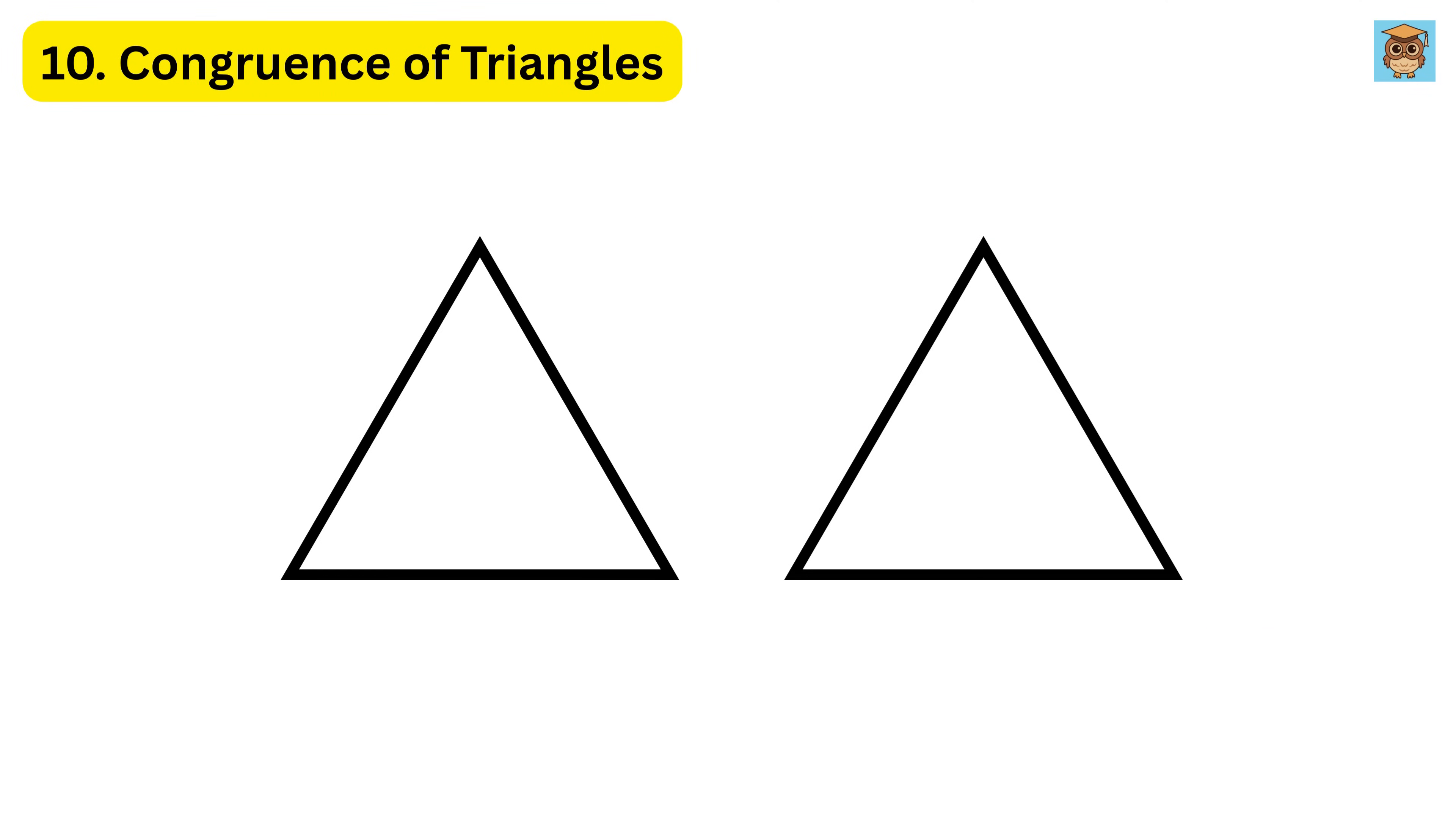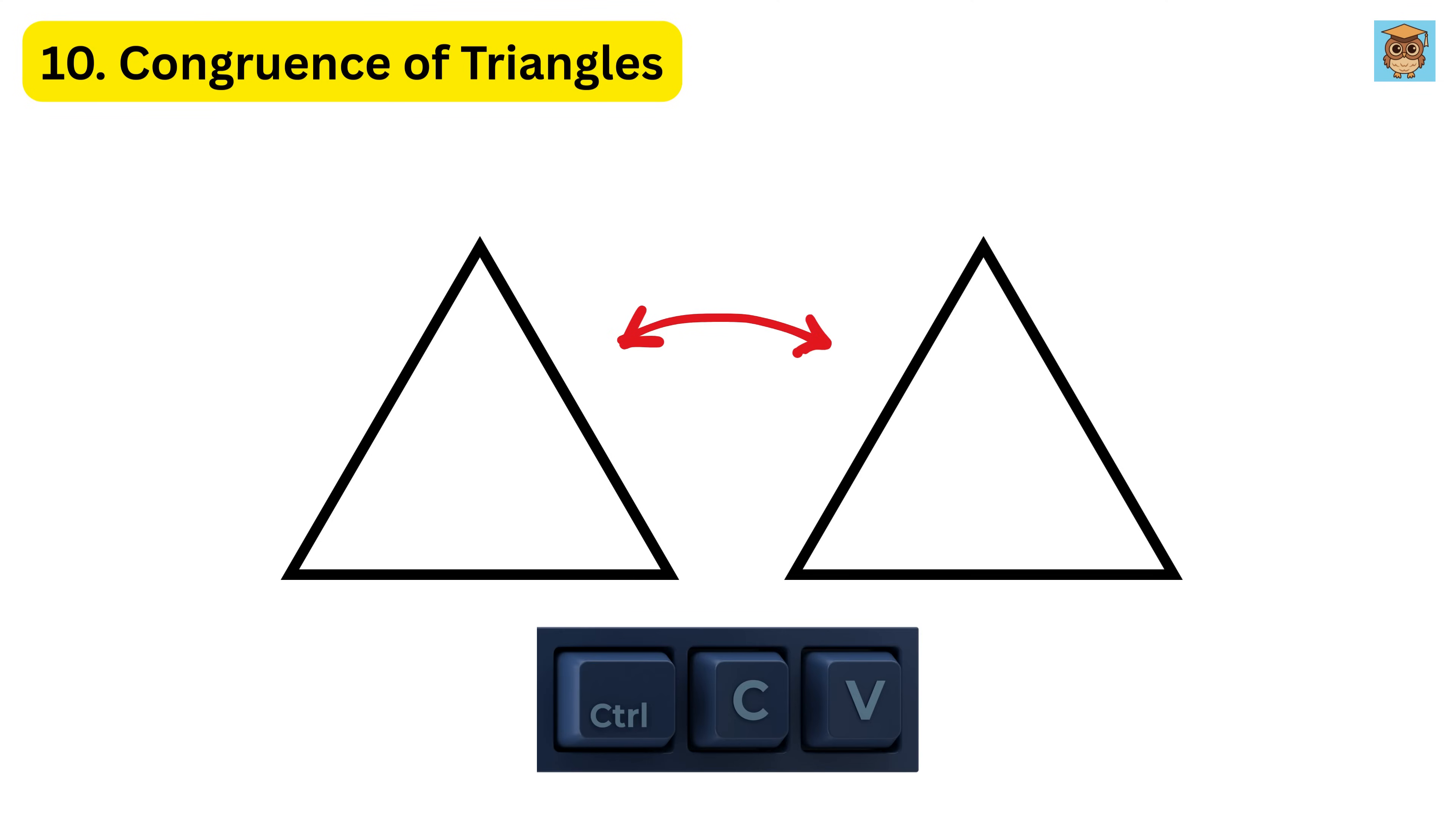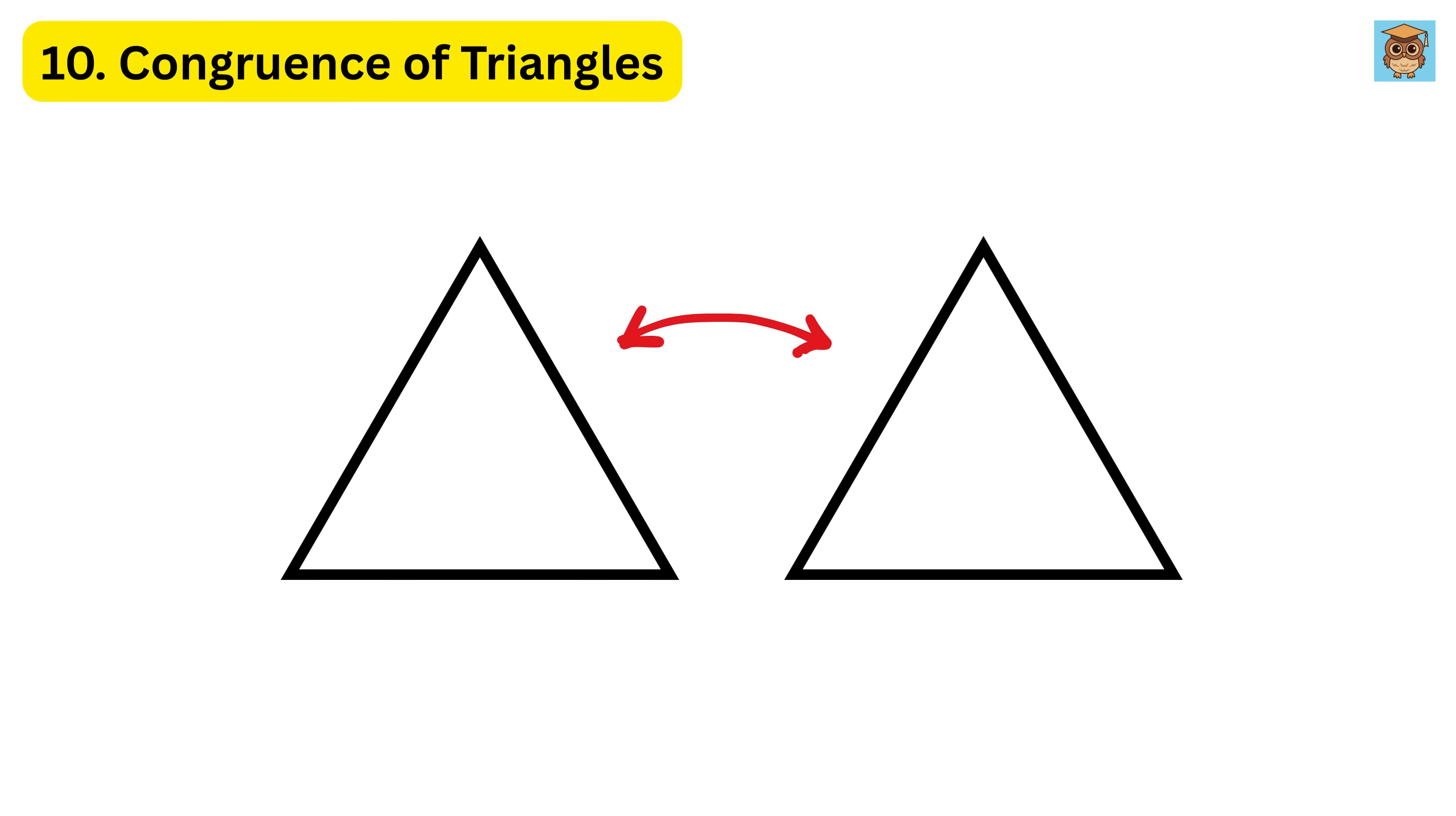10. Congruence of triangles. If two triangles have the same shape and size, like copy-paste or like twins, they are called congruent. Triangles can be congruent in different ways. If all three sides are the same, it is called side-side-side congruence. If two sides and the angle between them are the same, it is called side-angle-side congruence. If two angles and the side between them are the same, it is called angle-side-angle congruence.